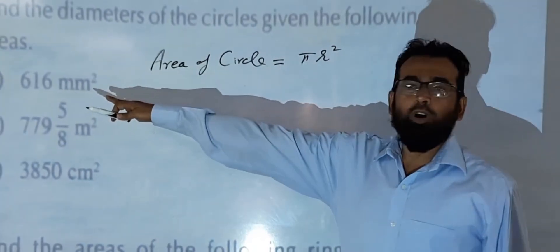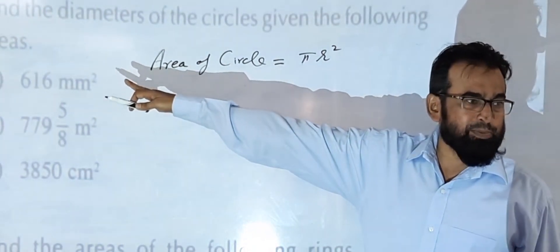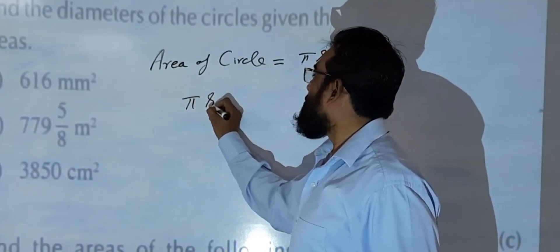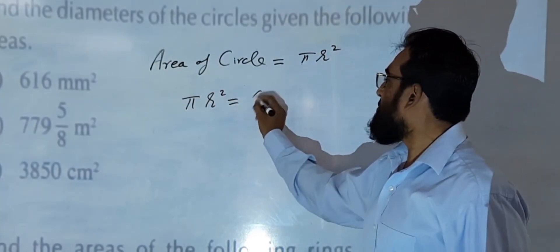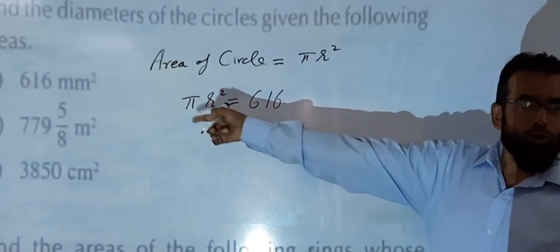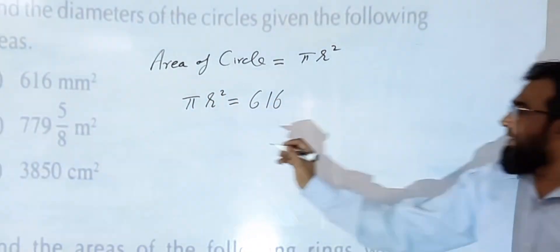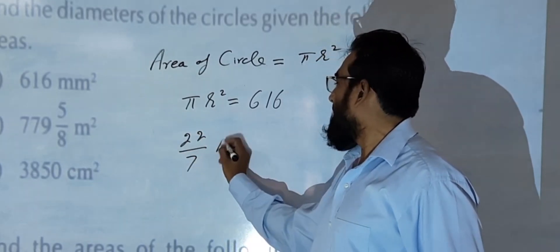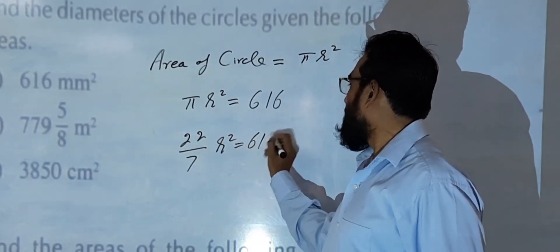Now the area of circle is already given, which is 616 mm². You will have to apply this value, meaning π r² is equal to 616. Now you know that the value of π you can take is 22/7. So, 22/7 × r² = 616.